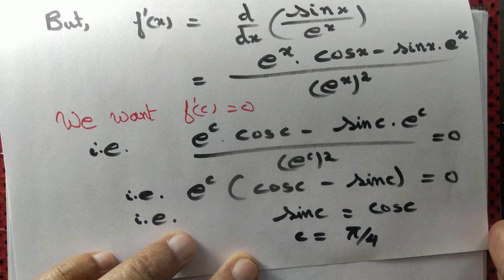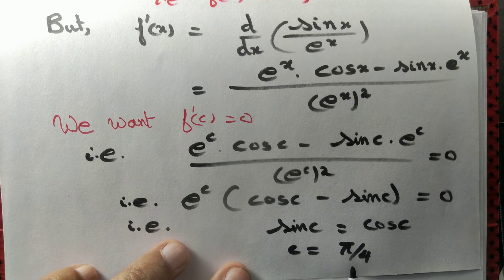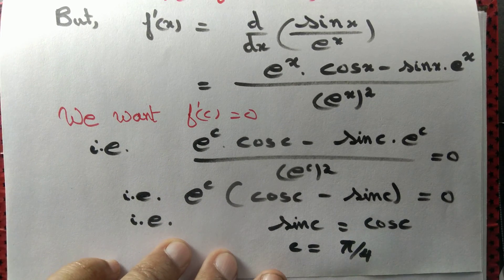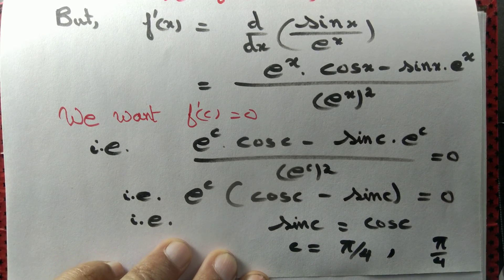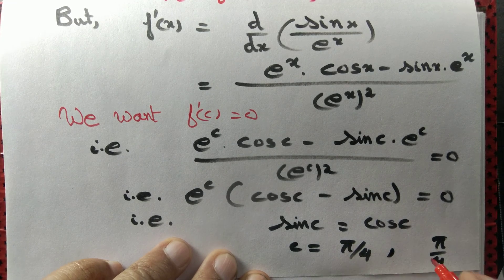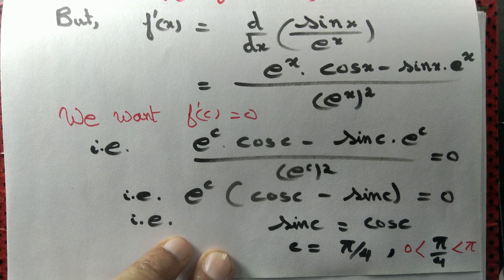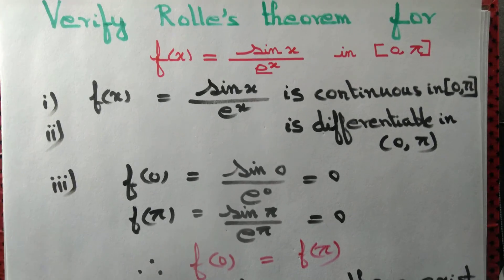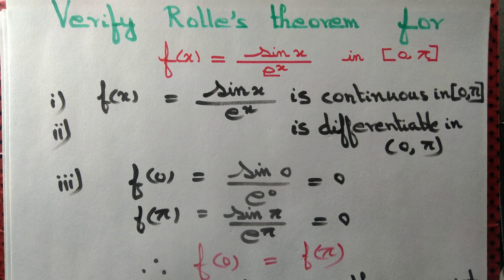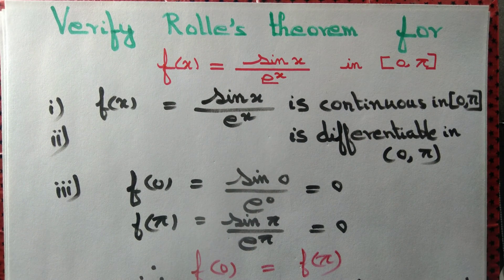Rolle's theorem guarantees a constant c with 0 < c < π. Is π/4 greater than 0? Yes. Is π/4 less than π? Yes. So π/4 lies in (0, π). We have found the constant c = π/4 such that f'(c) = 0 and c lies in the interval (0, π). Thus, Rolle's theorem is verified for this function on this interval.